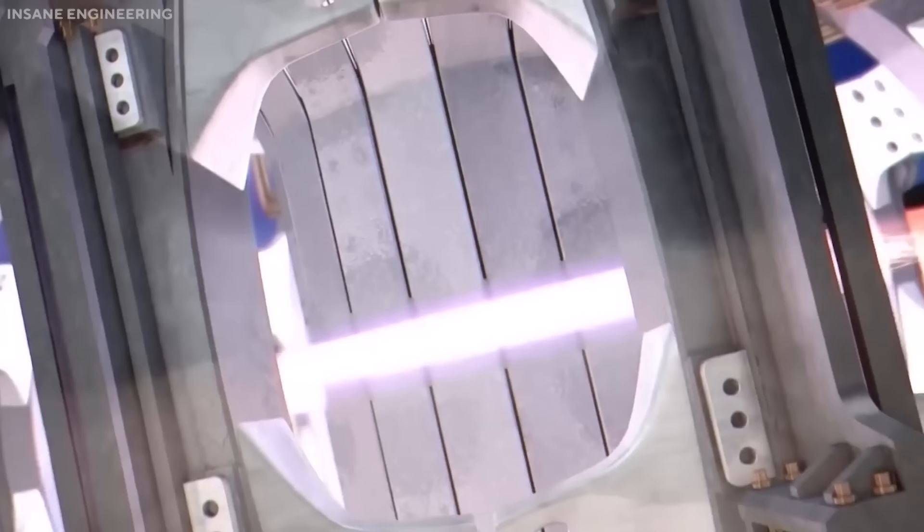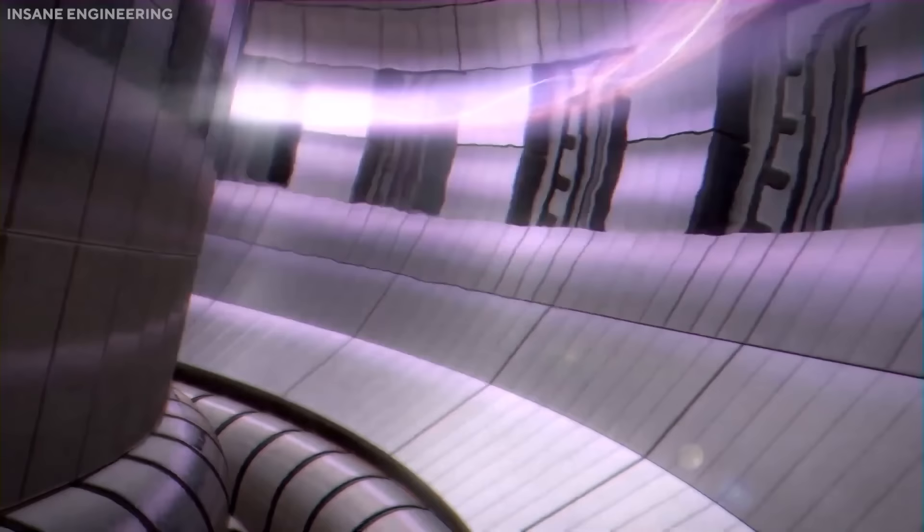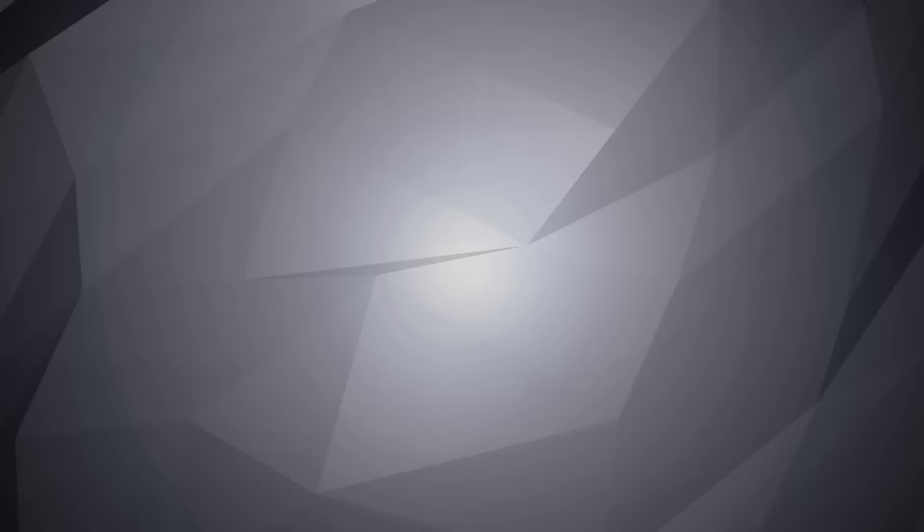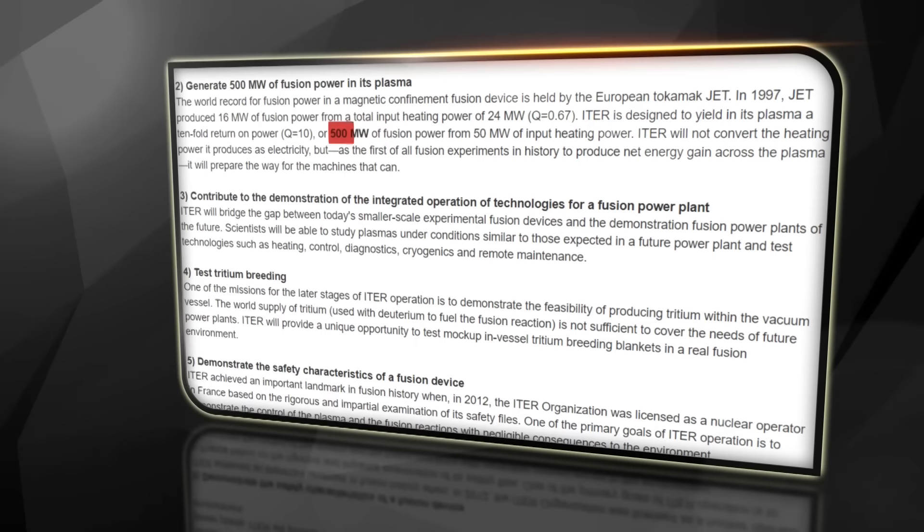The aim of ITER is to demonstrate the scientific and technological feasibility of fusion as a new energy source, and to take fusion energy to the threshold of industrial exploitation. The ITER reactor is designed to produce 500 megawatts of fusion power for at least 400 seconds, with a tenfold gain of plasma heating power, meaning that for every 50 megawatts of input power, the plasma will generate 500 megawatts of output power.